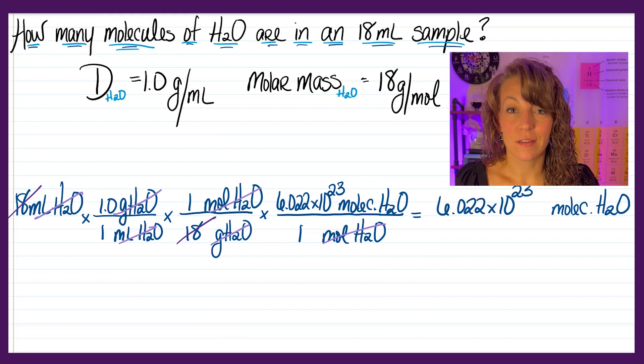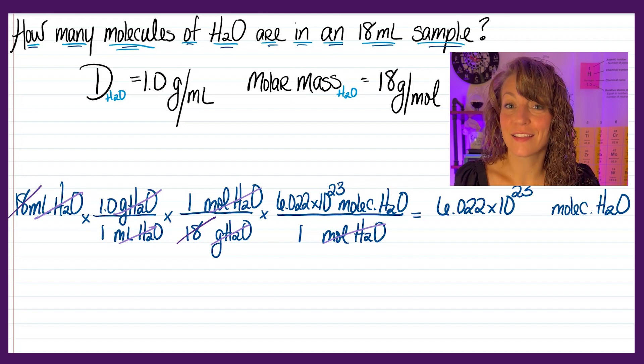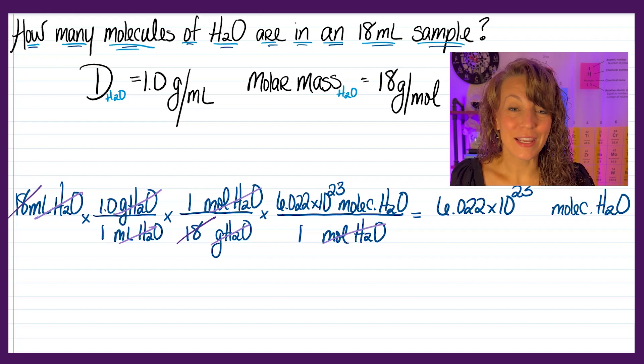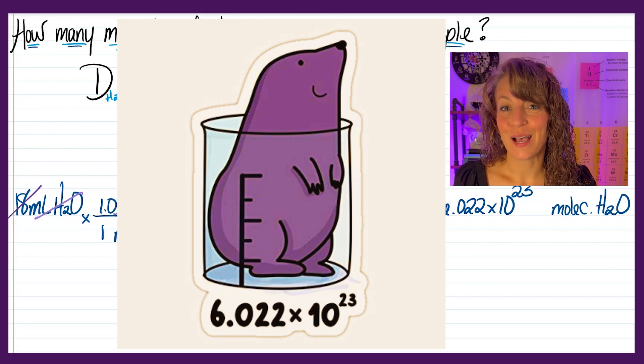So if you were to pour yourself an 18 milliliter glass of water, you would drink exactly one mole of water. This is why the mole is chemistry's most crucial unit. It allows us to count the number of minuscule particles not even the human eye could see, such as atoms, molecules, even electrons, and relate it to grams, milliliters, even energy.